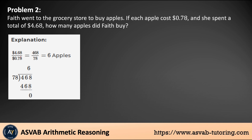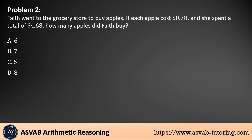You divide 4.68 by 0.78. In order to divide decimals, you try to get rid of the decimal. So 78 goes into 468 only 6 times — 6 times 78 gives you 468. The total number of apples is 6. That is the correct answer, letter A.